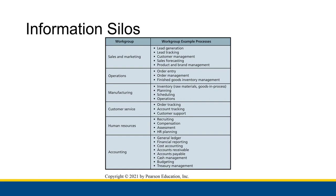They might be passing data back and forth between each other, depending on who's collecting what kind of data. But in the end, one database has a lot of information, another database has a lot of information, and some of that information might be the same — there might be an intersection. For example, with manufacturing and sales, the intersection might be the inventory: what products are there and how many of those products are in inventory. So that actually touches on one of the problems of information silos that I'm about to get into.